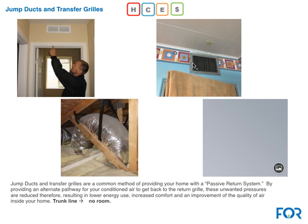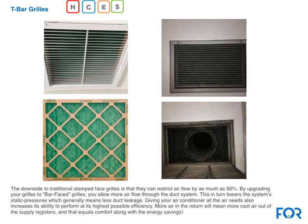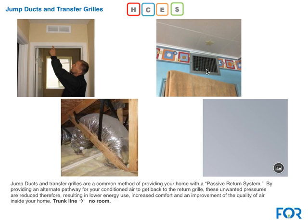To remove registers, undo a couple of screws carefully. If the register has been painted around the edges, carry a small exacto knife or razor blade to cut the paint line before pulling it off — the last thing you want is to peel paint. If everything is completely painted over, make a note, get pictures of that, and then look for one or two registers in the home that haven't been painted so you can pull those and get good pictures.